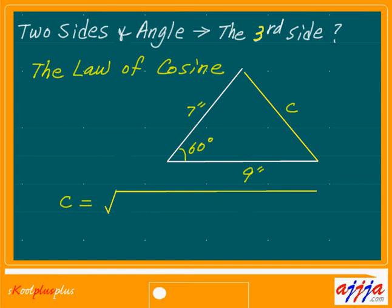So one more easy question. We are looking for the length of C. Two sides, 7 inches and 9 inches, and 60 degrees in between. Very simple. Square root, then 7 square plus 9 square, then minus 2 times 7, 9, then cosine 60.